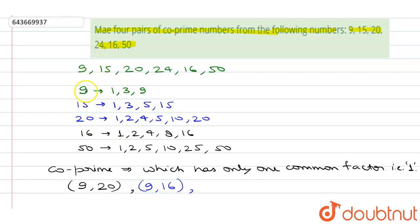If we look at 9 and 50, there is only one common factor which is 1, and there is no other common factor. Therefore, the third pair is 9 and 50, which is a co-prime number.